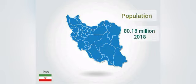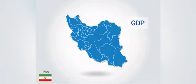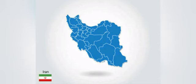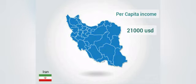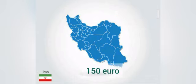In this country, we have a total population. The GDP is roughly 414 billion dollars. The per capita income is roughly 21,000 dollars, and the minimum wage is set at approximately 150 euros.